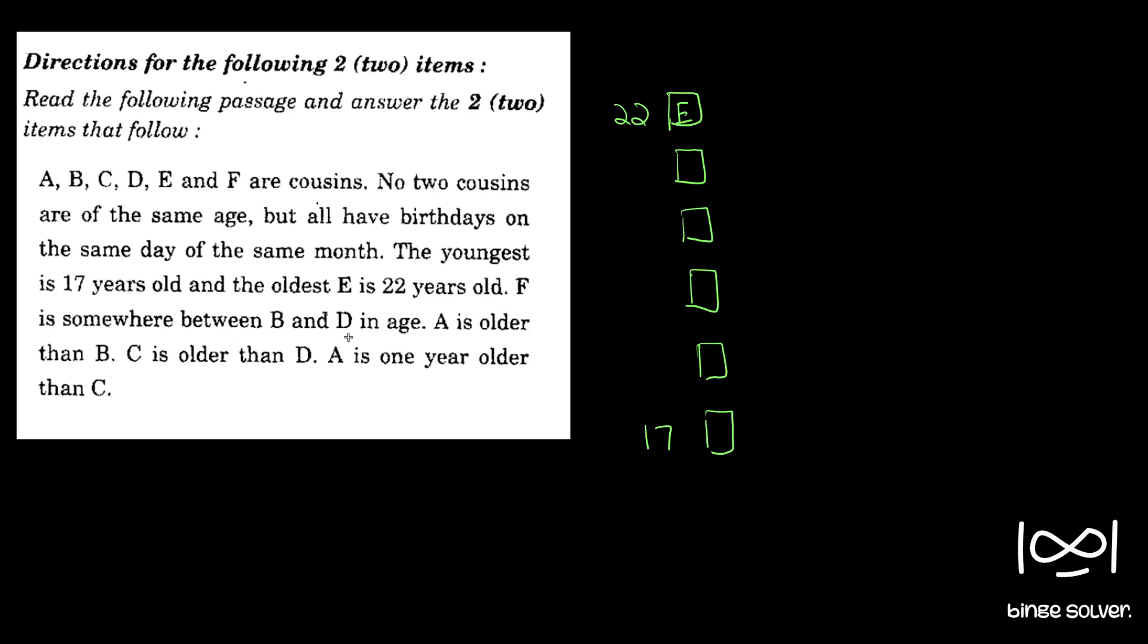Now it is given F is somewhere between B and D in age. So we have something like B, F, D. We don't know whether B is older or D is older. So we just know B, F, D. There can be people between them also, we don't know. So we will just hold it like that. Now A is older than B. So A is older than B and C is older than D. So A has to come on top of D.